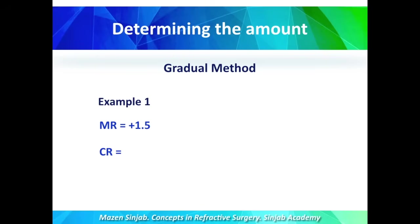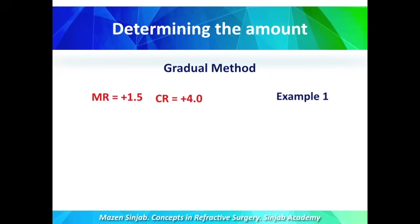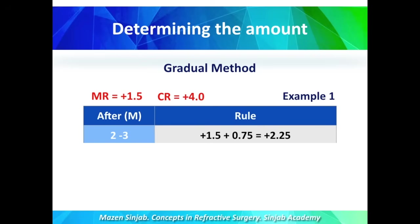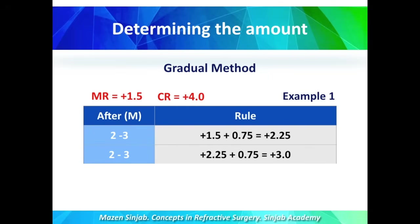Example number one: a patient has manifest refraction of plus 1.5, and cycloplegic refraction of plus 4. So delta is plus 2.5, and a quarter of delta is approximately 0.75. I start the prescription at the manifest refraction of plus 1.5. Then I ask the patient to come after two to three months to increase the prescription by 0.75, to become plus 2.25 diopters. The patient comes again after two to three months, and I ask whether they were comfortable. Most probably they will be comfortable, because we are still far from the cycloplegic refraction. So I can add another 0.75, to become plus 3 diopters.